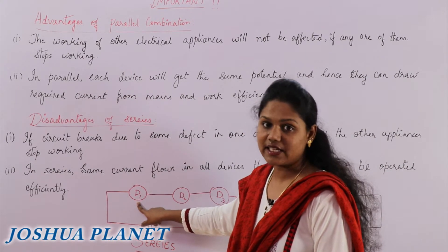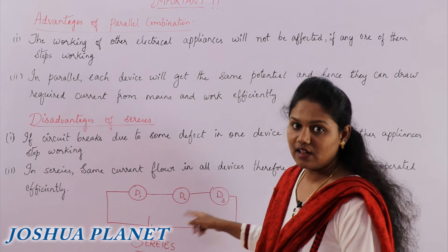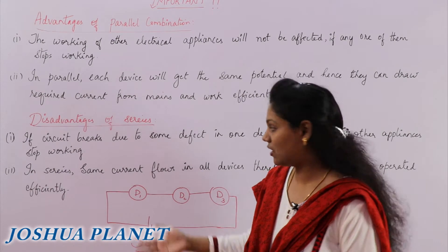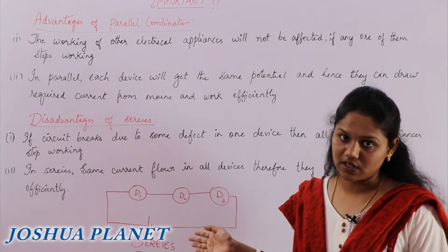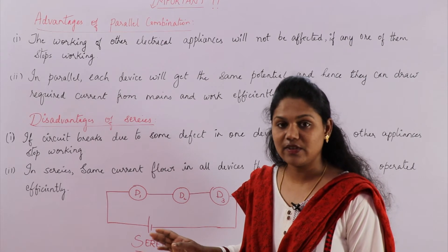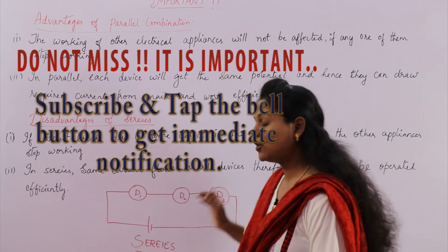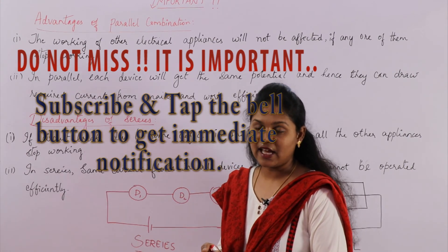Also, see now the device 1 is getting more current, device 2 is getting a little less, device 3 again even more lesser. So whatever device 1 and 2 uses and leaves, device 3 is getting the other one. Therefore, they won't get equal current. Each one of them will get different current. Therefore, the devices will not work efficiently. So this is how you will represent the answer.